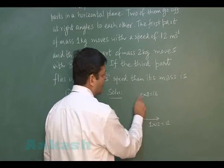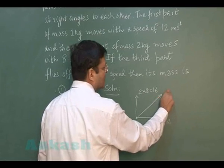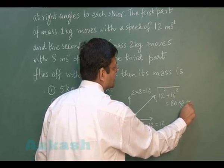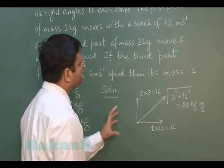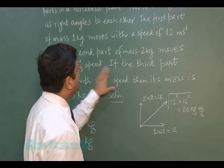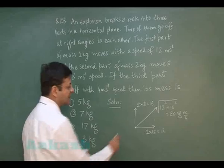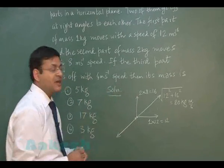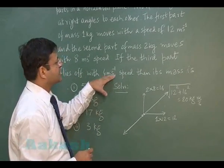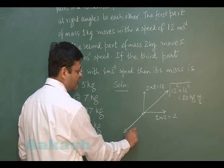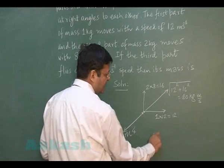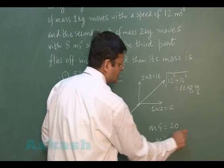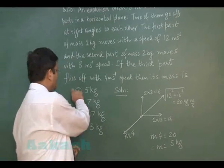Taking the Pythagorean resultant of the two perpendicular momenta: √(12² + 16²) = √(144 + 256) = 20 kg·m/s. This is the net linear momentum of the two parts. The third part must fly off in exactly the opposite direction with the same momentum magnitude. Given its speed is 4 m/s, its mass m satisfies m × 4 = 20, so m = 5 kg. The most appropriate answer is the first option.